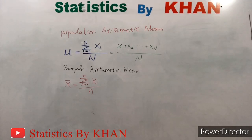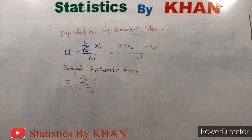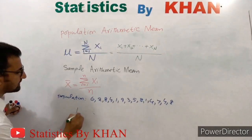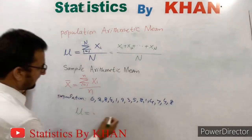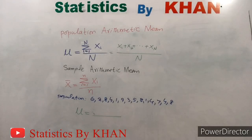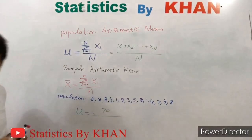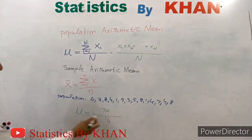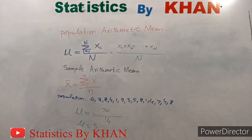There is no real difference in the numerical computation. For example, if I am going to compute the population arithmetic mean from a dataset that represents the entire population — the only difference will be in notation, it will be mu. If I add all the observations they give a sum of 70, and the number of observations is 14, so mu equals 70 divided by 14, which equals 5. This is the population arithmetic mean.